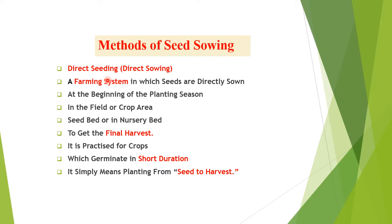The first method is direct sowing or direct seeding. It's a farming system in which seeds are directly sown at the beginning of the planting season in the field, crop area, seed bed, or nursery bed. The aim is to get the final harvest — from seed to harvest. It is practiced for crops which germinate in short duration.